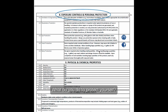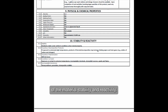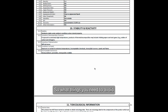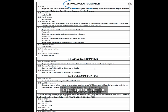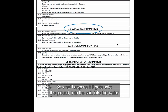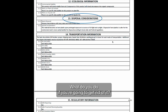Section nine covers the physical and chemical properties of the material. Section ten is stability and reactivity — what things you need to avoid. Section eleven is toxicological information — is it carcinogenic, mutagenic, or toxic in any way. Section twelve is ecological information — what happens if it gets onto the ground, into the soil, or into the water.